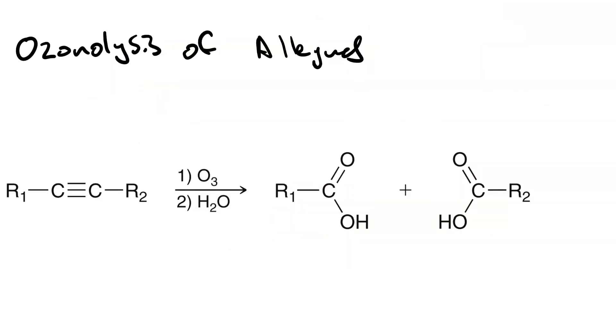When we do ozonolysis of alkynes, it's a similar outcome. Our first reagent is ozone, but for the second reagent, all we need is water, a very mild oxidizing agent. Again, we snip down the center of the pi bonds and we get two fragments. But in the case of an internal alkyne, we get two carboxylic acids.